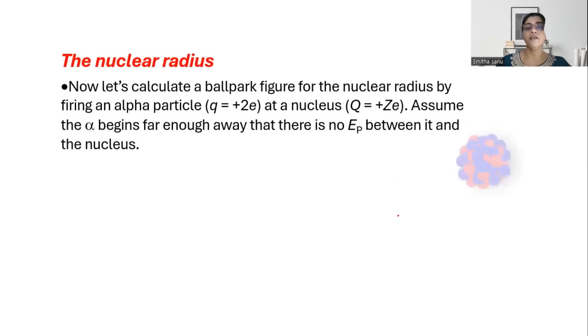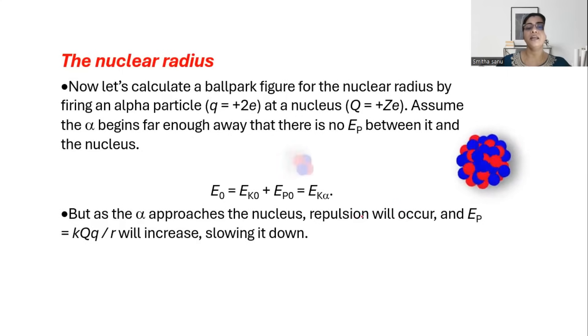When an alpha particle comes closer to the nucleus, the entire energy initially is only kinetic energy. At the point where it has reached the nucleus and is stopping at that position, the entire energy is only the electrostatic potential energy, which is KQq over R, where capital Q is the charge of the nucleus and small q is the charge of the alpha particle.